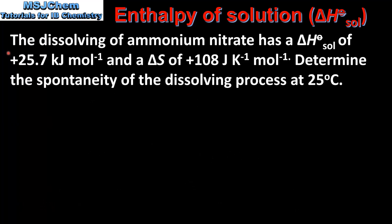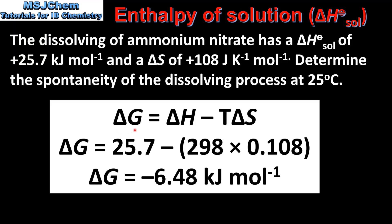We'll end the video by looking at a quick example. The dissolving of ammonium nitrate has an enthalpy change of solution of positive 25.7 kJ/mol and a change in entropy of positive 108 J/(K·mol). Determine the spontaneity of the dissolving process at 25°C. We'll use the equation ΔG = ΔH − TΔS. Inputting the values gives us a ΔG value of negative 6.48 kJ/mol. So the reaction is spontaneous at 25°C. This shows that despite having an endothermic enthalpy change of solution, the dissolving of ammonium nitrate is spontaneous at this temperature because of the increase in entropy as the solid dissolves in water to form aqueous ions.